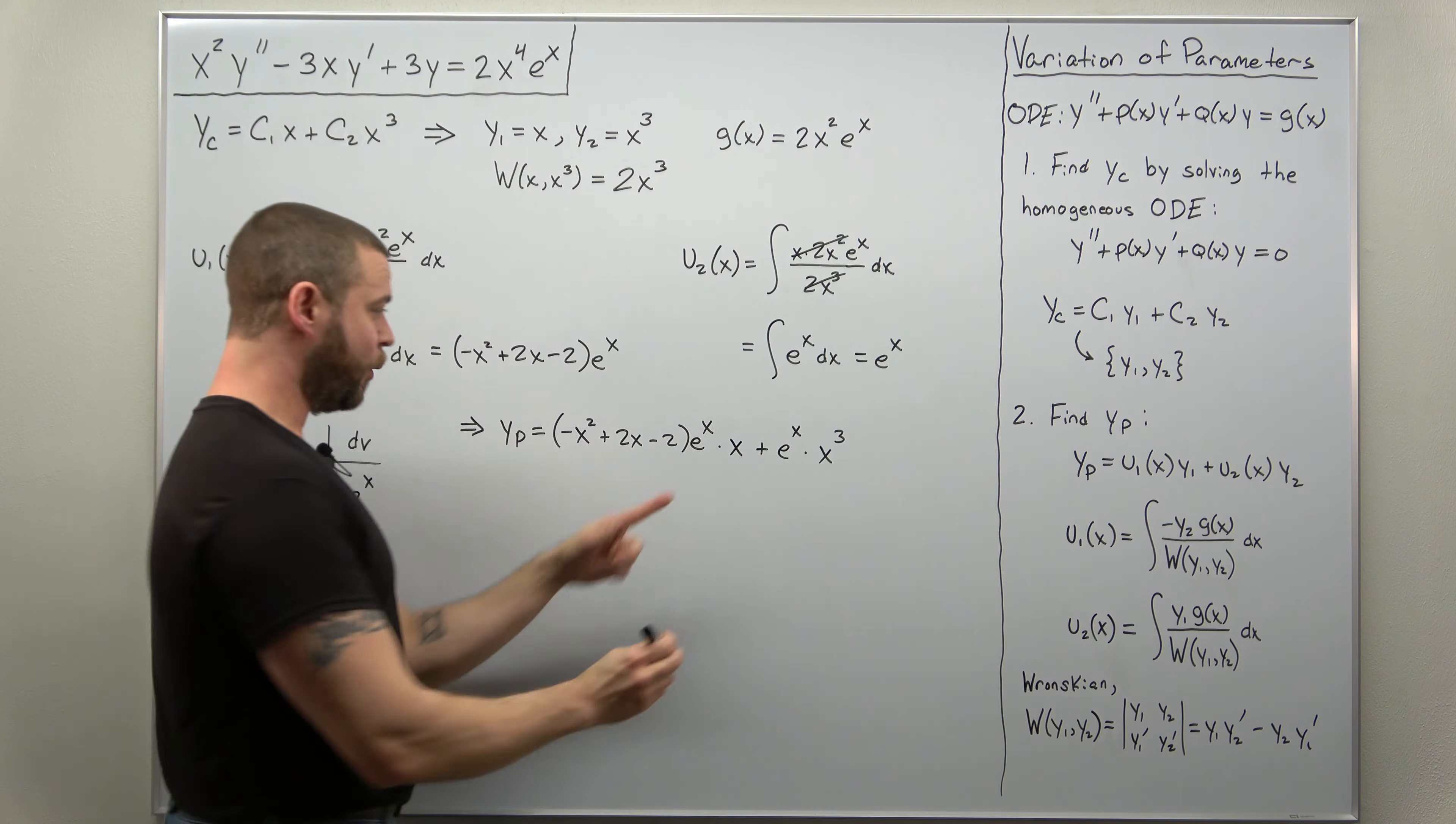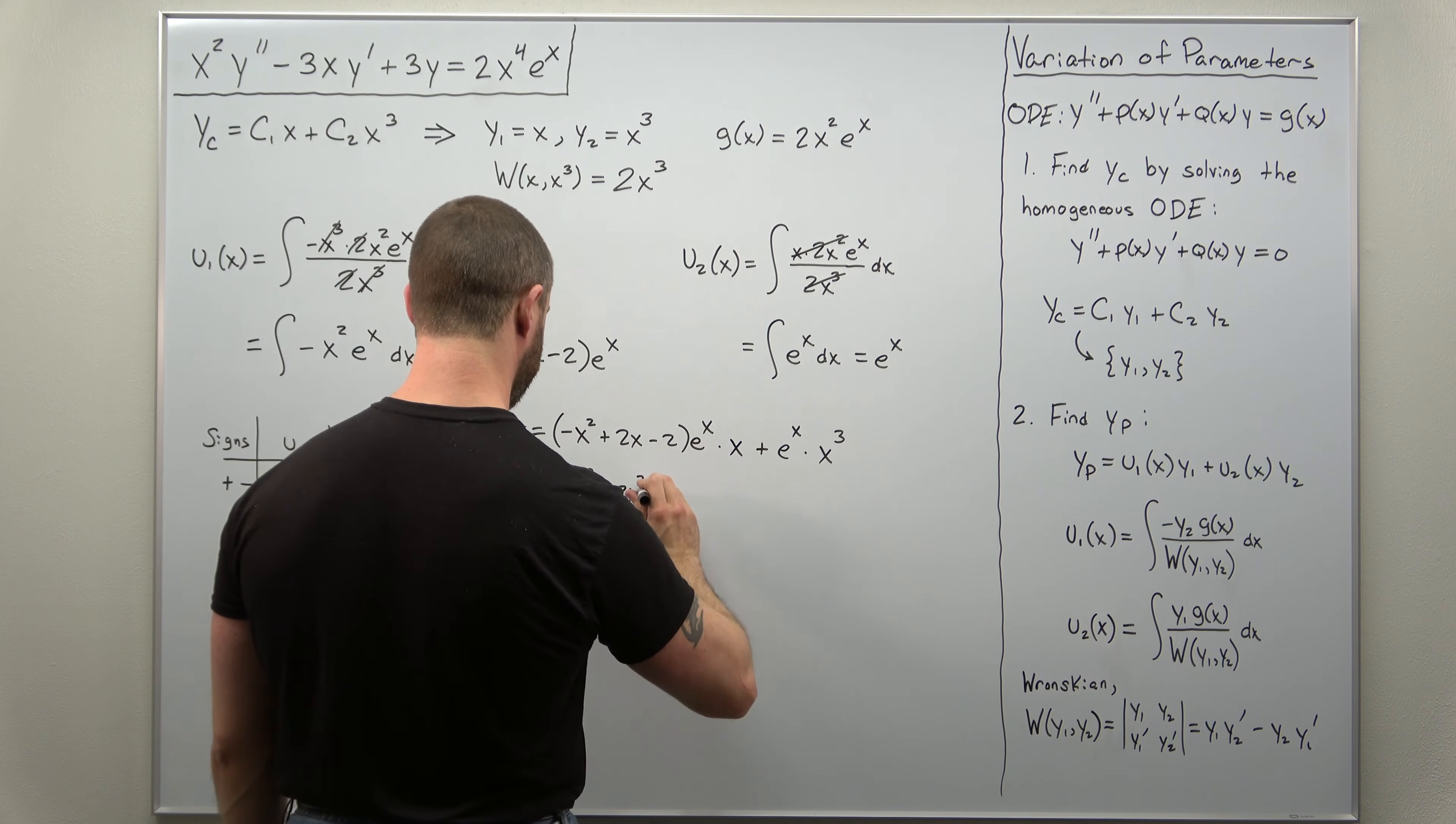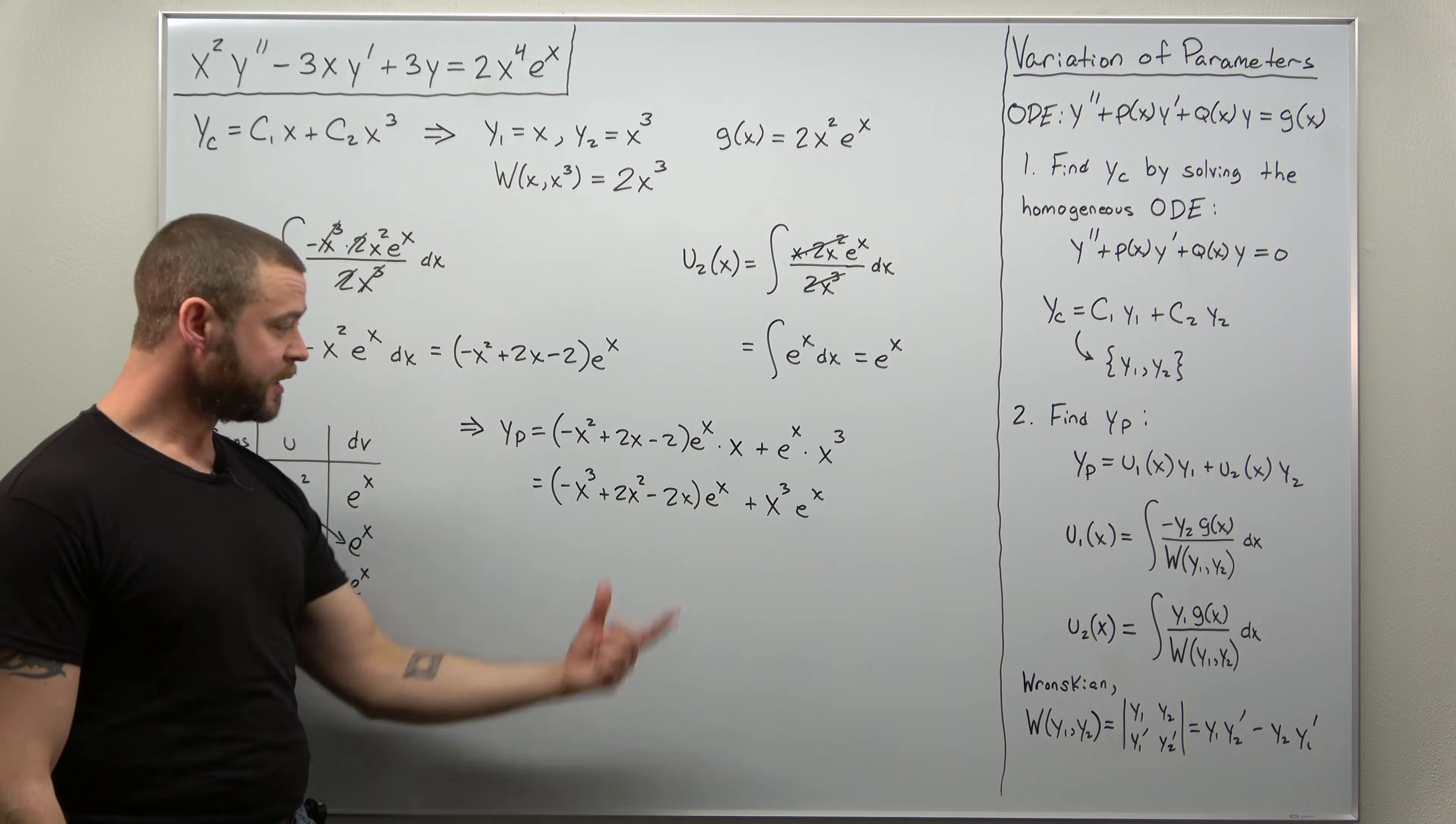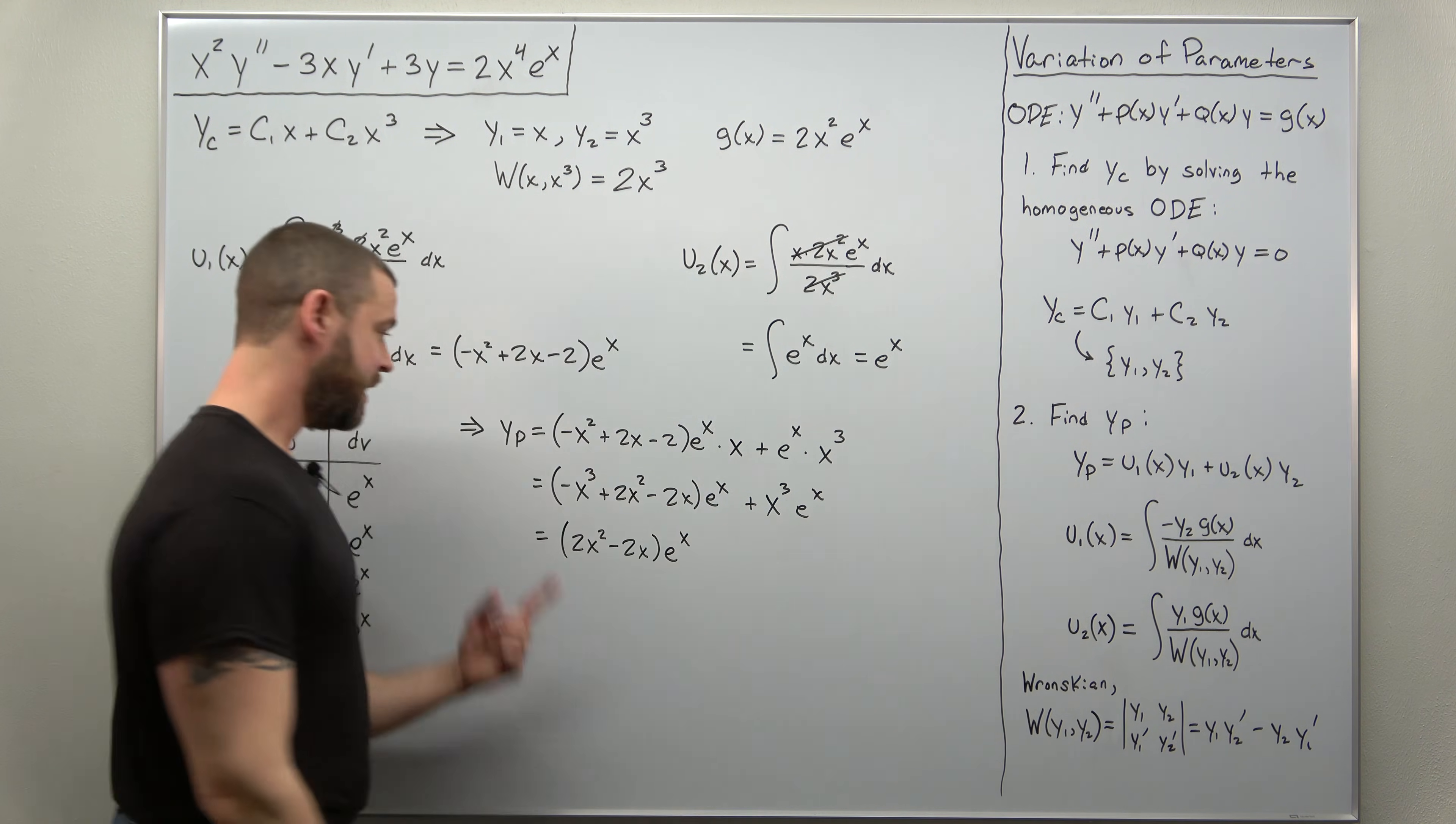All right, now this might look a little bit complicated. But one thing we can do, notice each term has an E to the X in it. So you might think of factoring that out. But maybe distribute that X through parentheses to see if you have some like terms. So let me go ahead and do that. I'm just going to distribute the X through the parentheses. So we'll get minus X cubed plus 2X squared minus 2X. That's times E to the X. And let me just rearrange these terms. I'll put the X cubed in front of the exponential. And you can probably see what's going to happen if you were to factor E to the X out. You have negative X cubed, positive X cubed. Those cancel out. And looks like you're left with 2X squared minus 2X all times E to the X. And that is your particular solution.